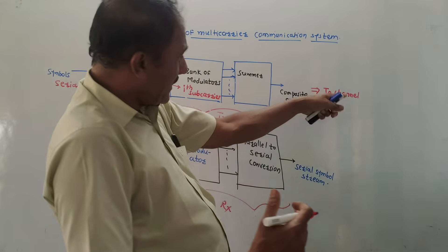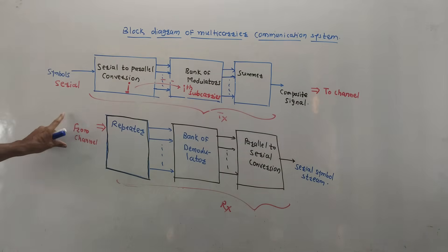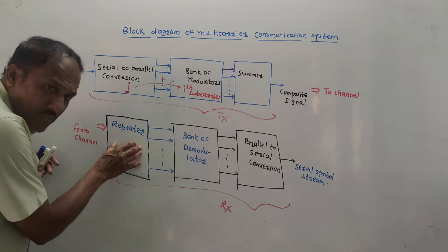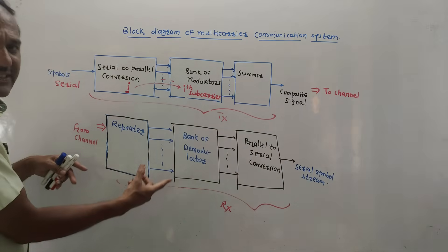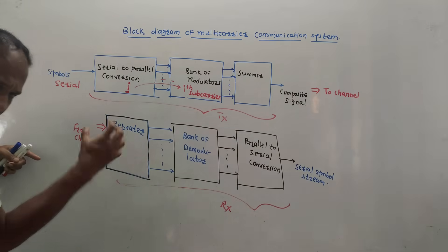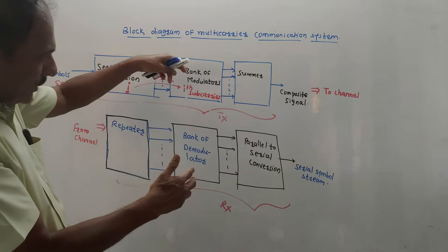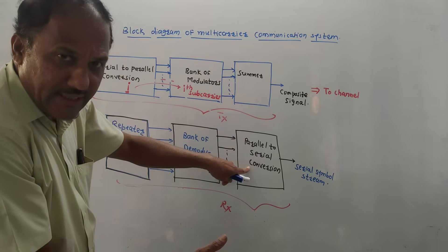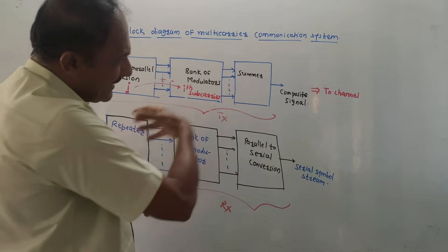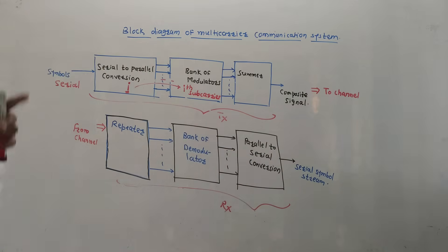On the receiver side, this composite signal is received. The first block is the antenna (repeater), which receives and amplifies the signal — noise may have been added during channel transmission. Then a demodulator block performs the opposite operation to the modulator. The final block is parallel-to-serial conversion, converting the parallel data back to the original serial format.